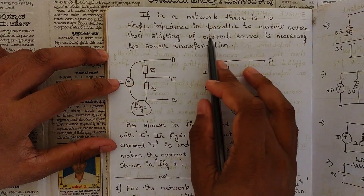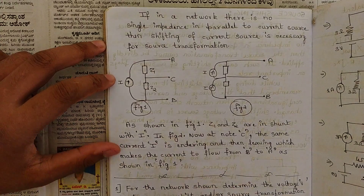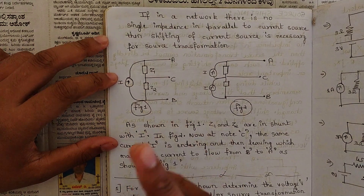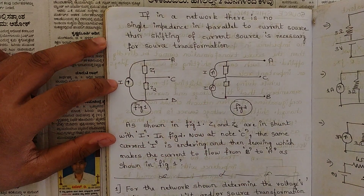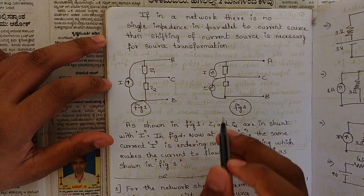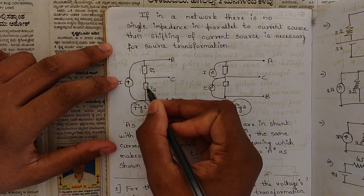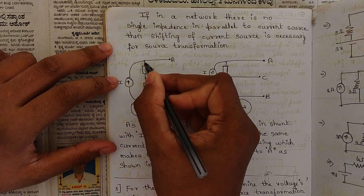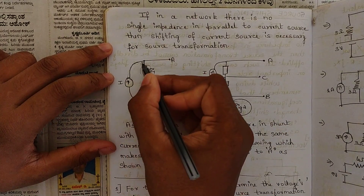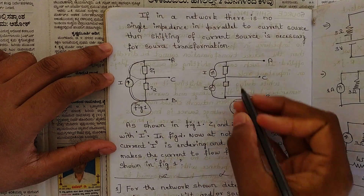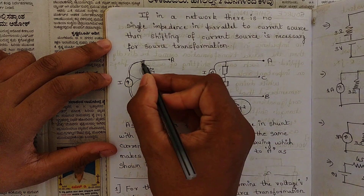If in a network there is no single impedance in parallel with a current source, then shifting of the current source is necessary for source transformation. Similarly, for a voltage source, if we don't have a series resistance along with it, source transformation is not possible. In the case of a current source, whenever we have a connection between terminals A and B with Z1 and Z2 in different branches with a current source connected across them, we can split the current source between the two branches so that it is in parallel with each resistance.